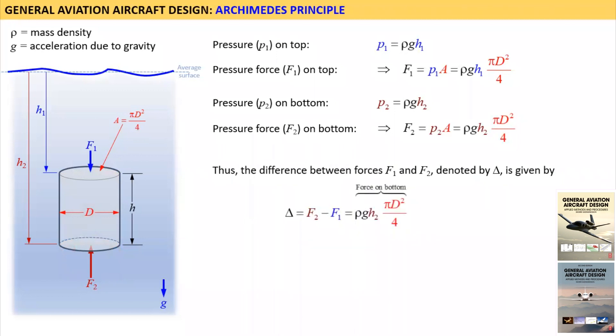Substituting out parameters leads to the equation. Then simplifying yields another expression. Now note that the difference H2 minus H1 is the height of the cylinder H and the product of the height H and the area A is the volume of the cylinder here denoted by V strikethrough. Therefore the buoyancy force is given by rho G V strikethrough. And the Archimedes principle is the expression shown below.